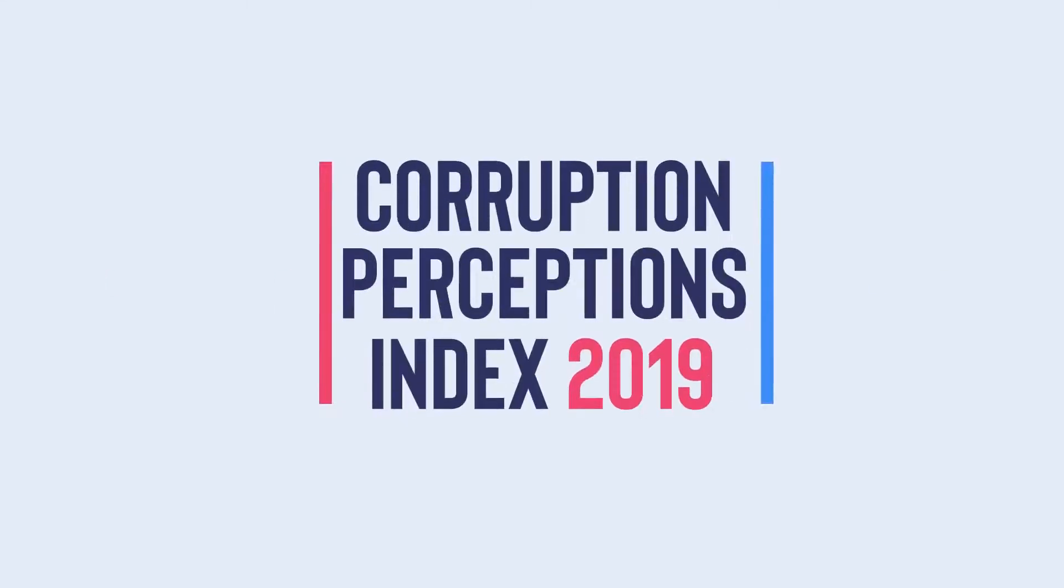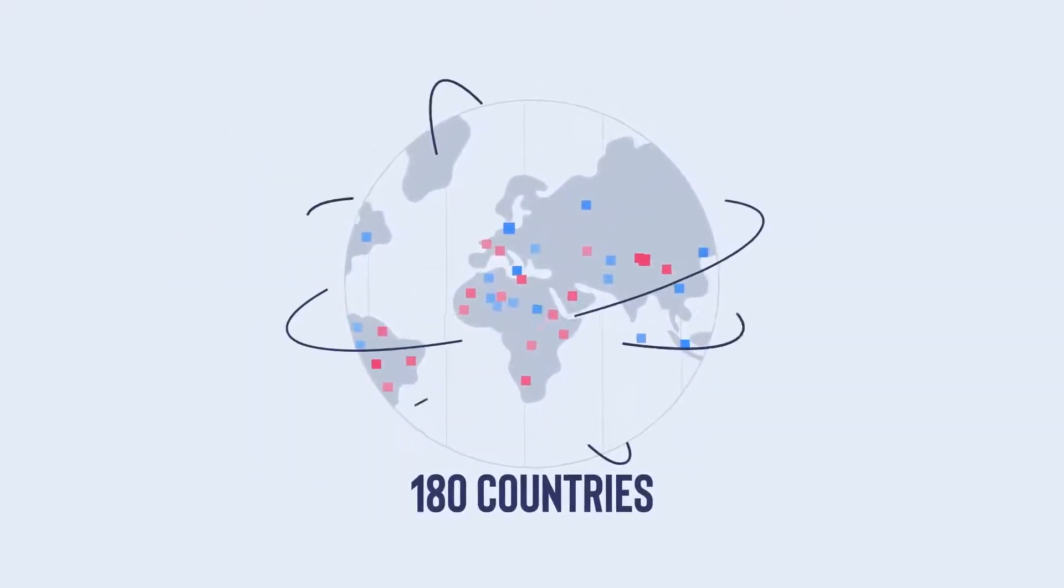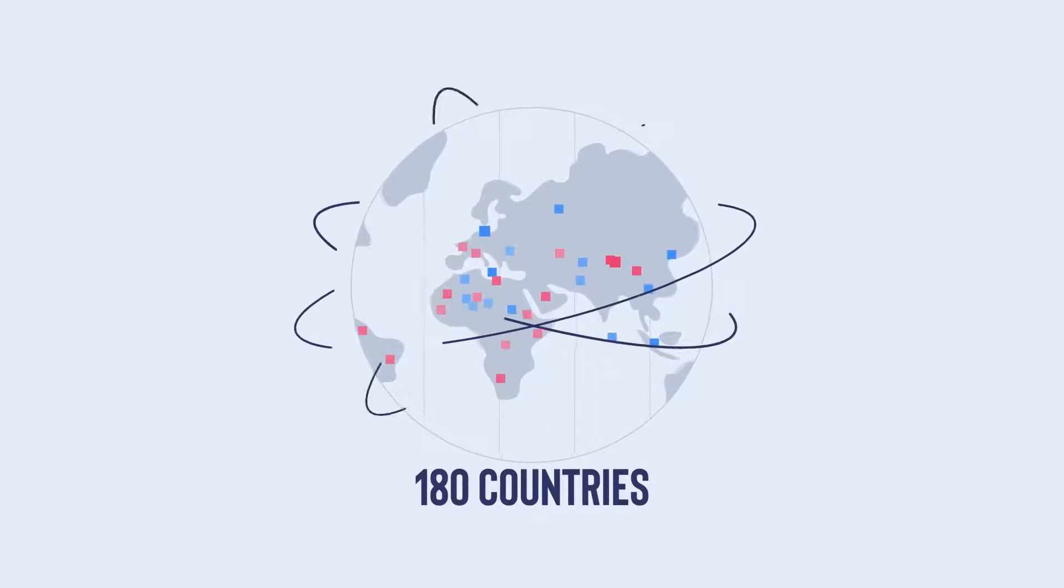Transparency International presents the Corruption Perceptions Index 2019. Using a scale of 0 to 100, where 0 is highly corrupt and 100 is very clean.